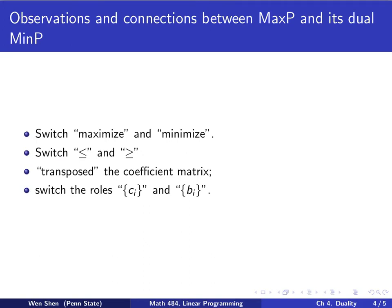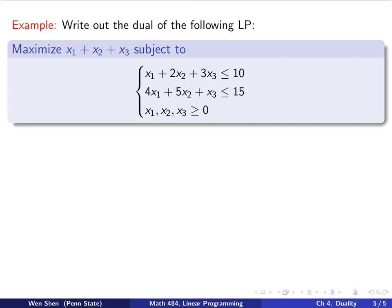So maybe it's better to take a look at an example. Here is an example of how to write out the dual of an LP in max form. We have the linear programming problem in max form, like this. Maximizing x1 plus x2 plus x3, subject to two constraints and restricted variables. How do we set up the corresponding dual?